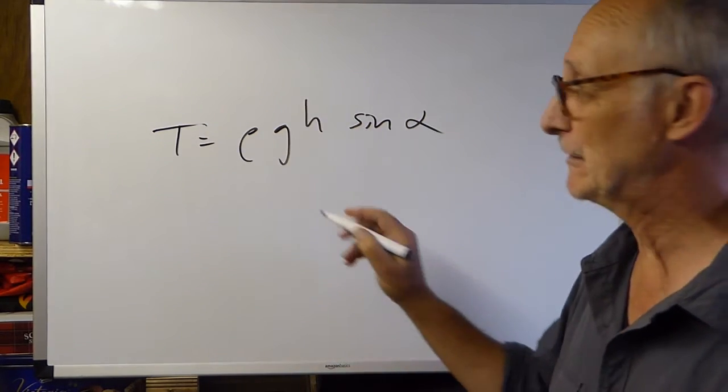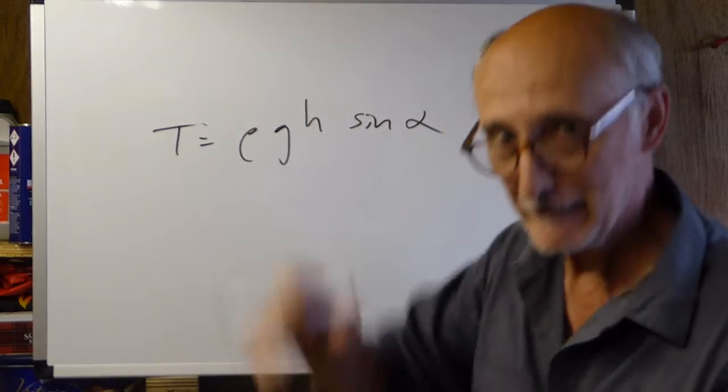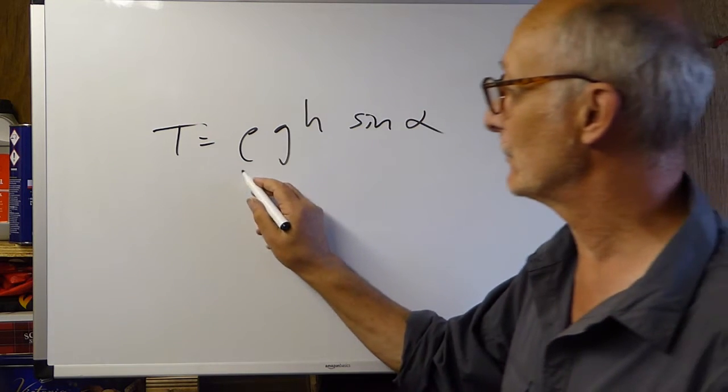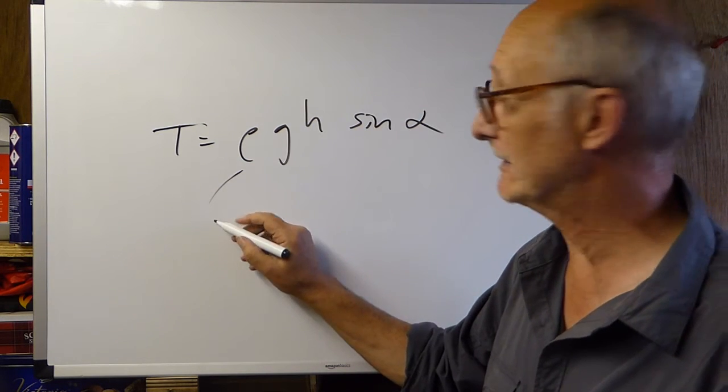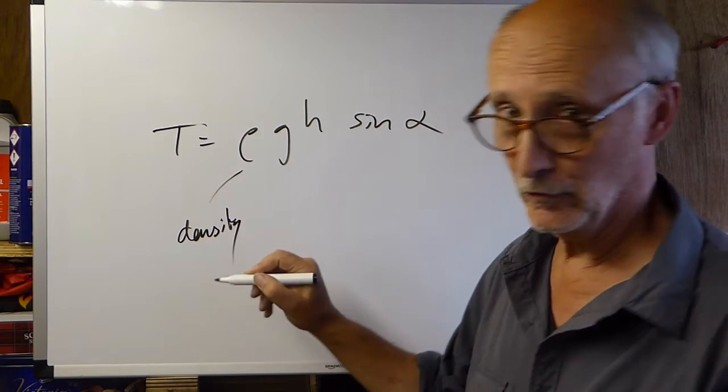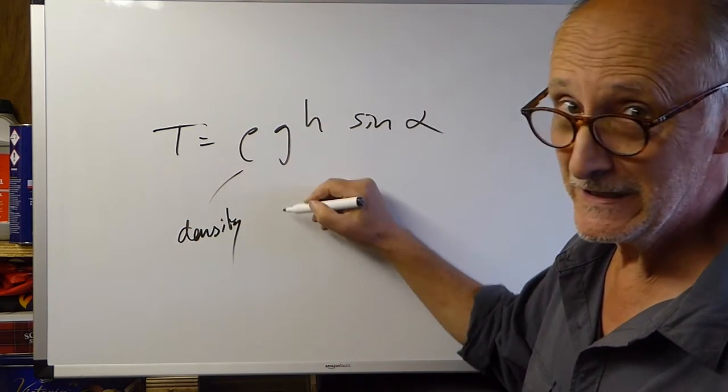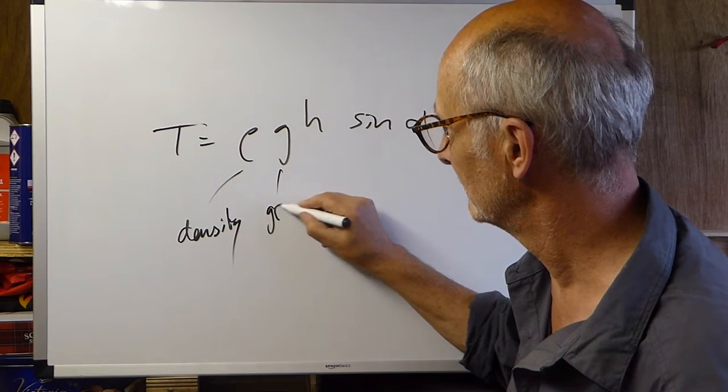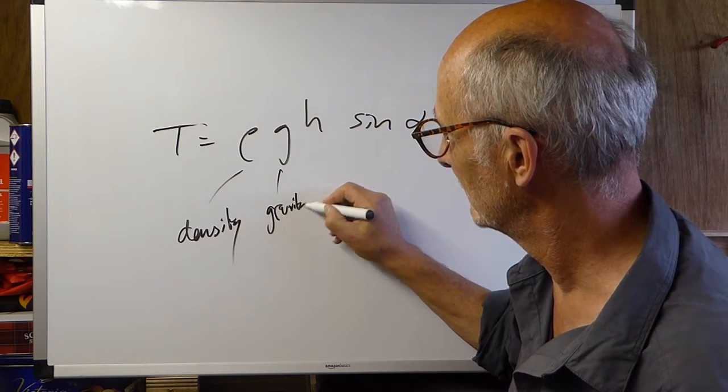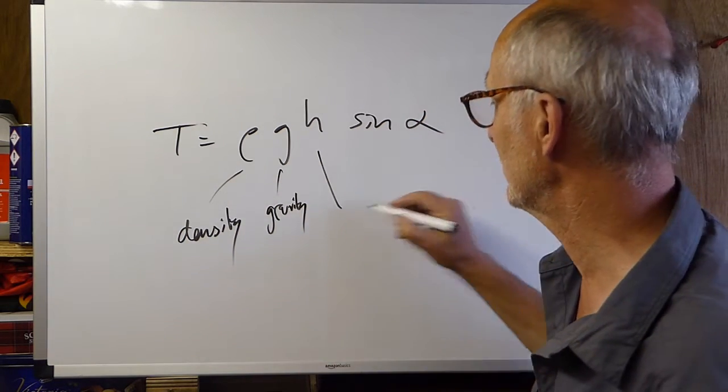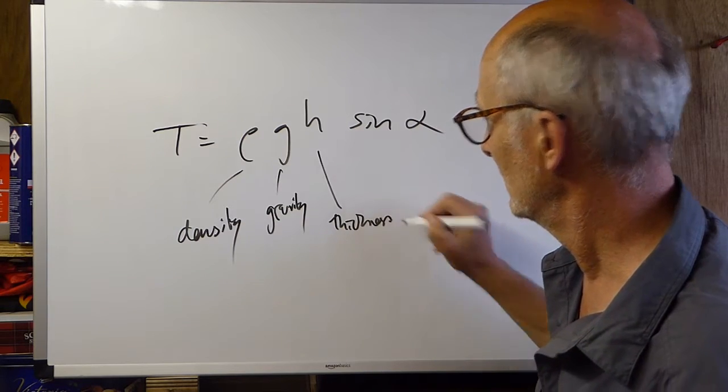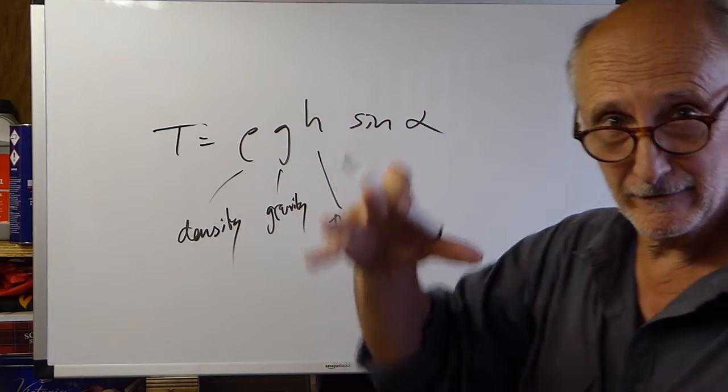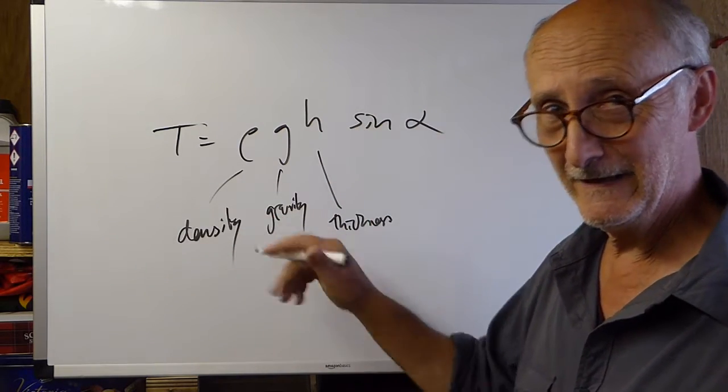So, just to explain the terms first of all, tau, shear stress, shear stress as opposed to normal stress. So, the shear stress is rho g h sine alpha. Rho is simply the density of ice, 0.9 grams per centimeter cubed. G is the force of gravity, 9.8 meters per second per second. And h is the height or thickness of the ice. So, we've got the density of the ice, we've got the force of gravity, and we've got the thickness or the amount of ice.